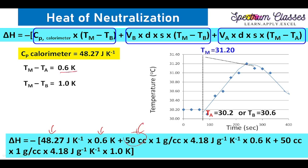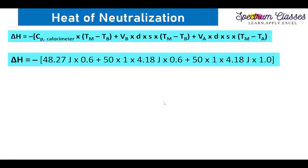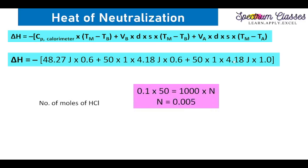Now putting in the readings: 50 ml of solution was taken in the calorimeter, with density of water = 1 g/cc. All readings are mentioned with their units for clarity. The heat capacity of water and for the acid is also written. Units cancel out: cc with cc, grams with grams, and Kelvin with Kelvin, leaving only Joules.